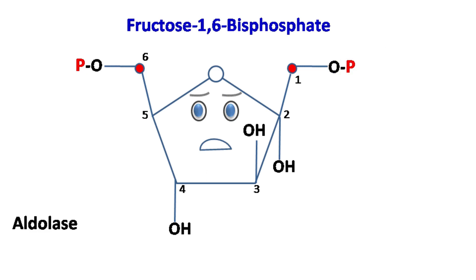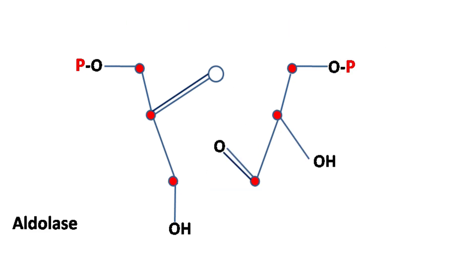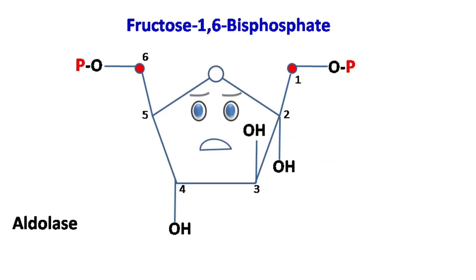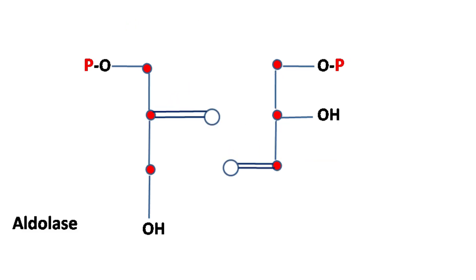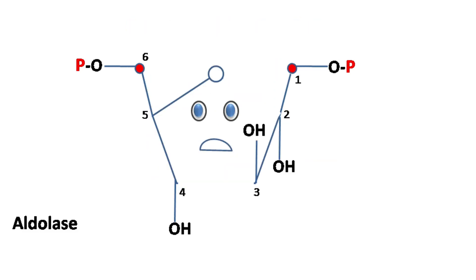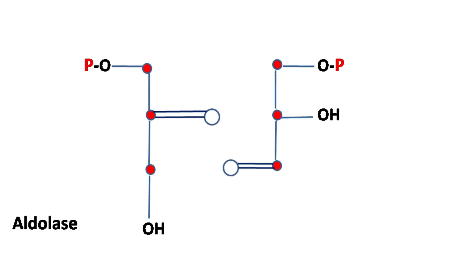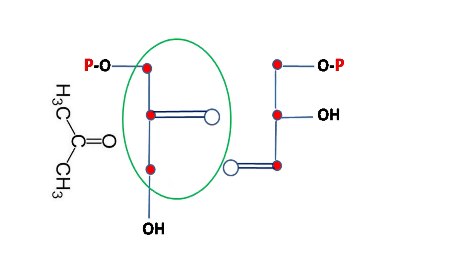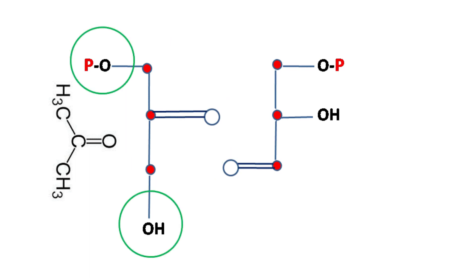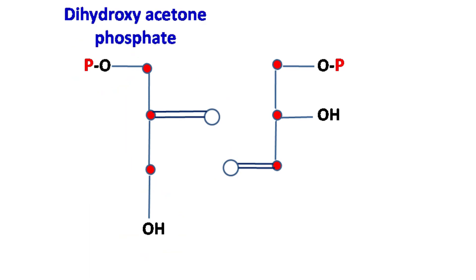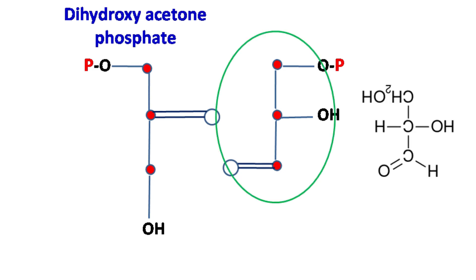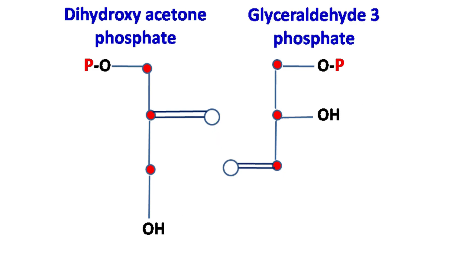Then comes an enzyme aldolase which breaks down fructose-1,6-bisphosphate into two molecules. One molecule resembles the structure of acetone with two hydroxyl groups and a phosphate, hence it is called dihydroxyacetone phosphate. The other molecule resembles the structure of glyceraldehyde and hence is called glyceraldehyde-3-phosphate.